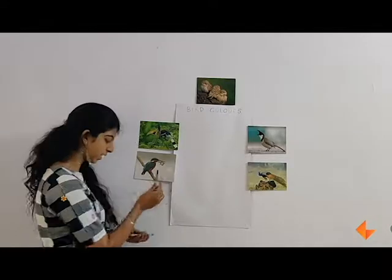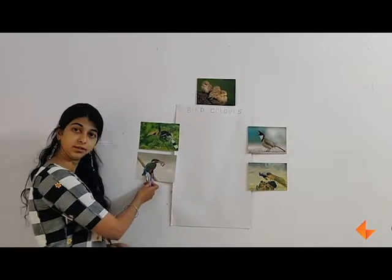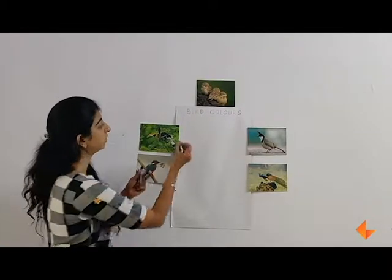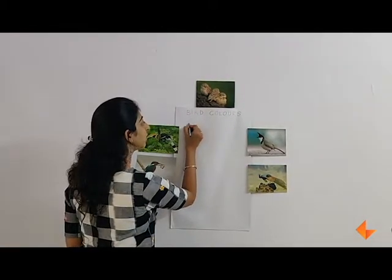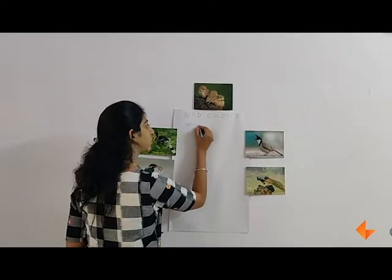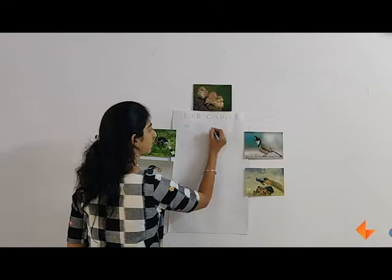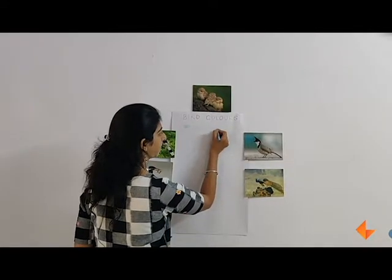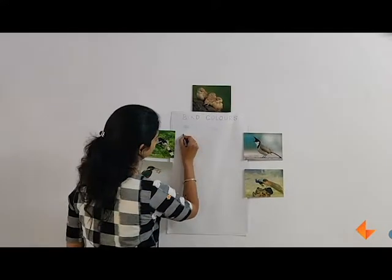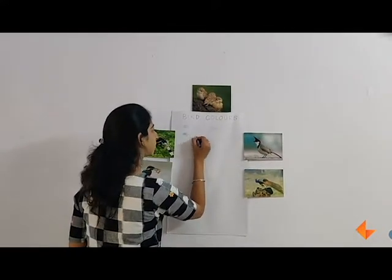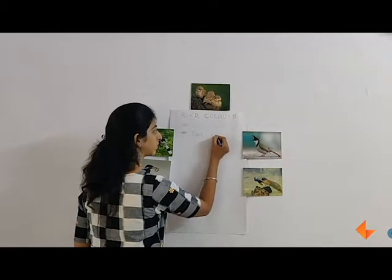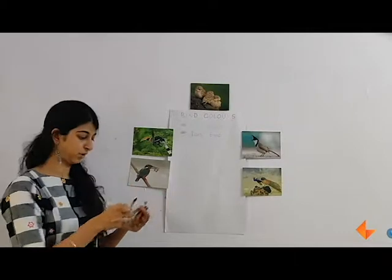Do we see a dark blue or do we see a light blue on the bird? We see both colours on this bird. So we will quickly colour that shade on the chart paper and write it next to it. Do we also see dark blue? Move to another picture.